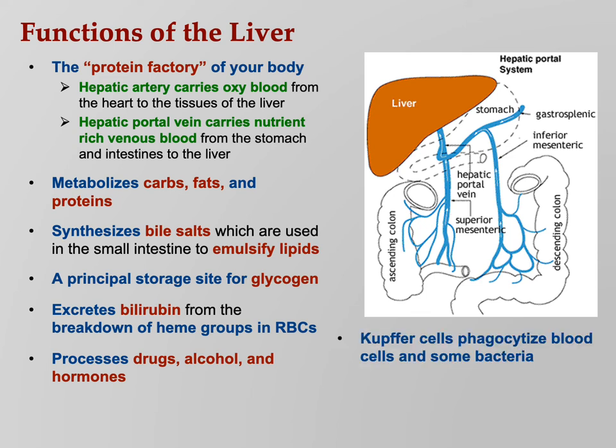Kupffer cells are fixed macrophages — if any bad guys make it into the liver through the hepatic portal vein, those Kupffer cells will kill them dead. And remember, it takes three organs to make vitamin D: it starts in your skin, then the liver takes over, and finally the kidney takes over. So you need your liver in order to produce vitamin D.